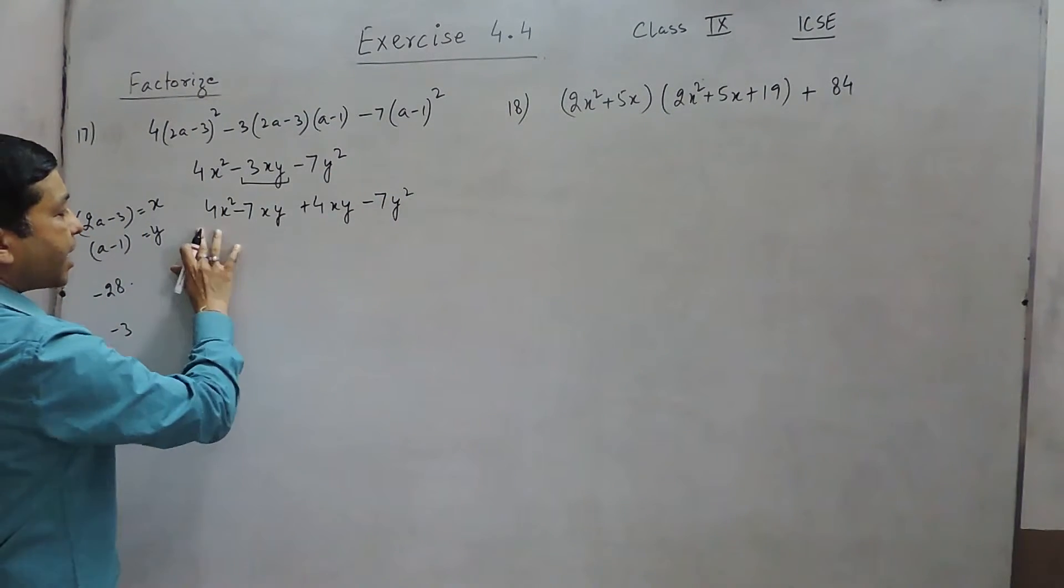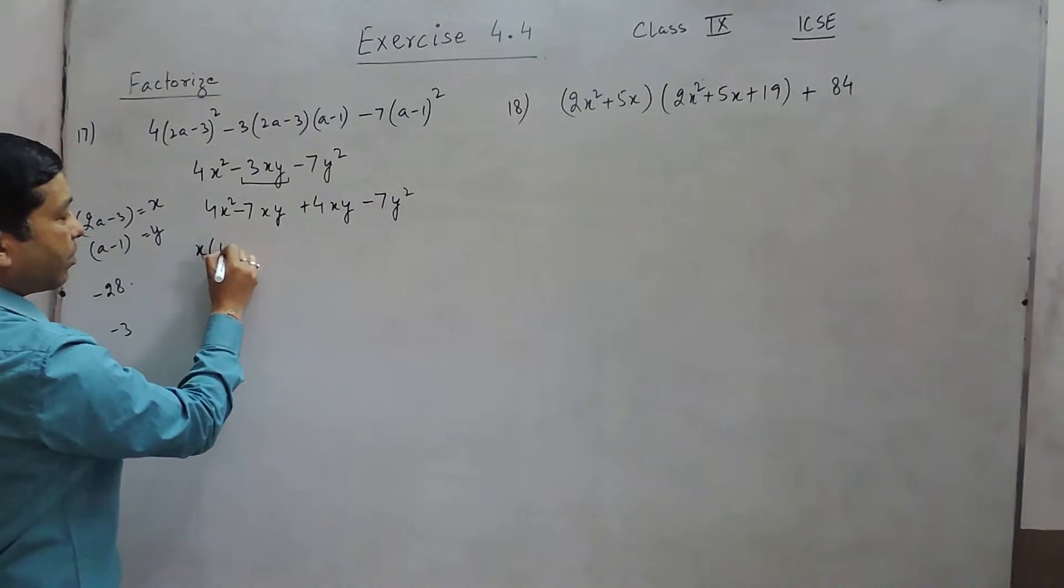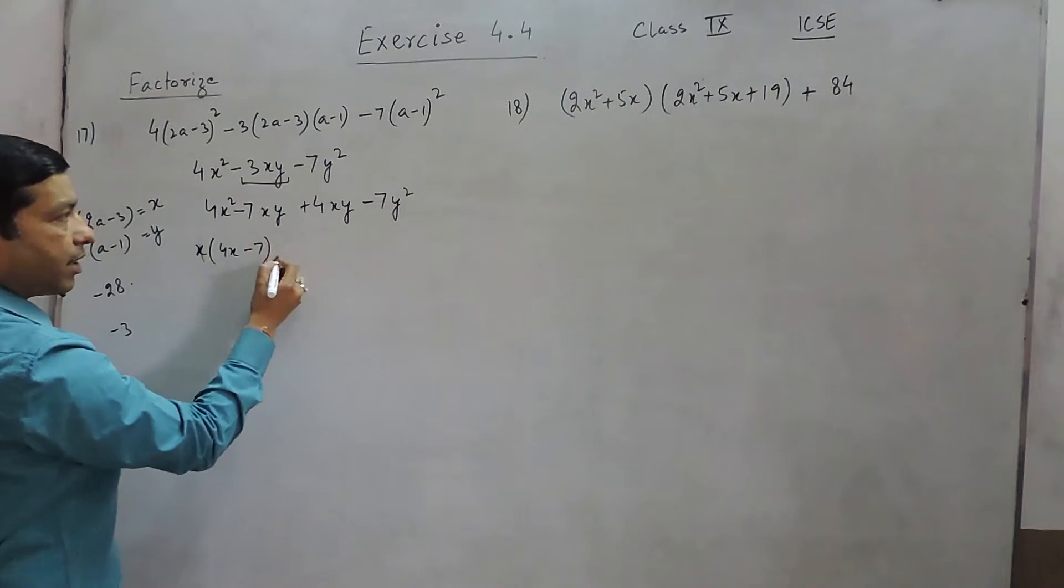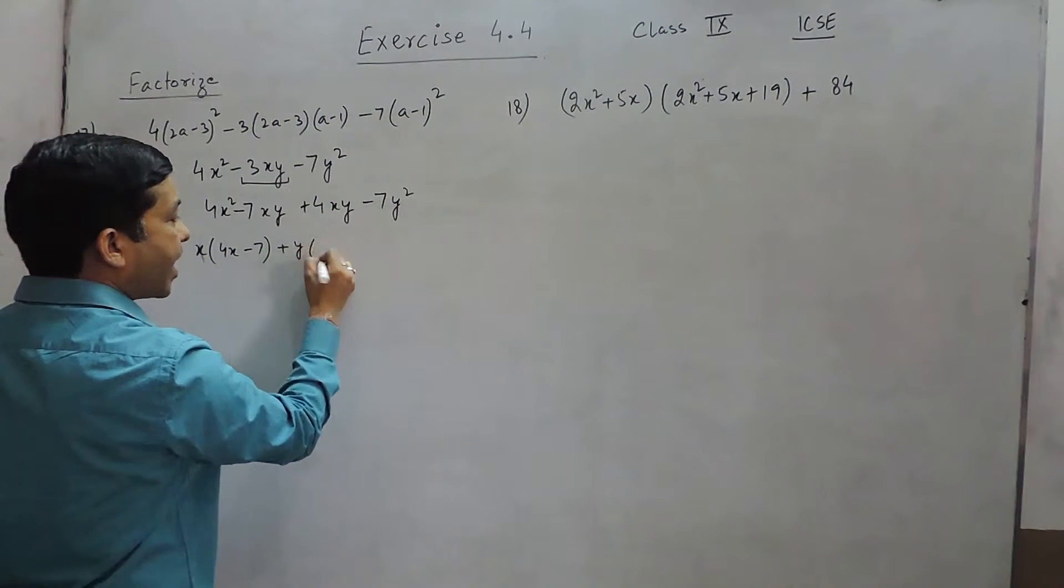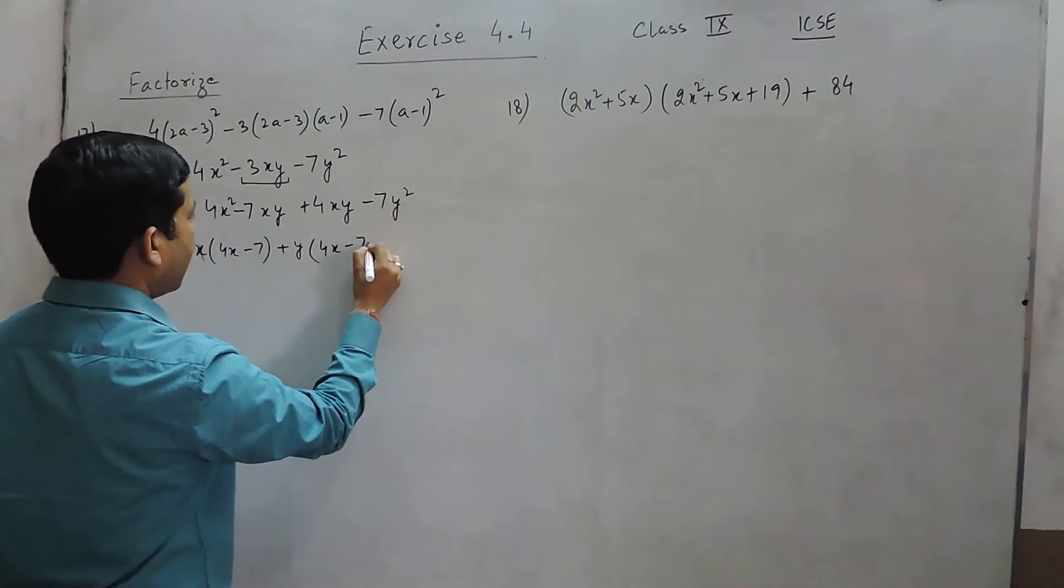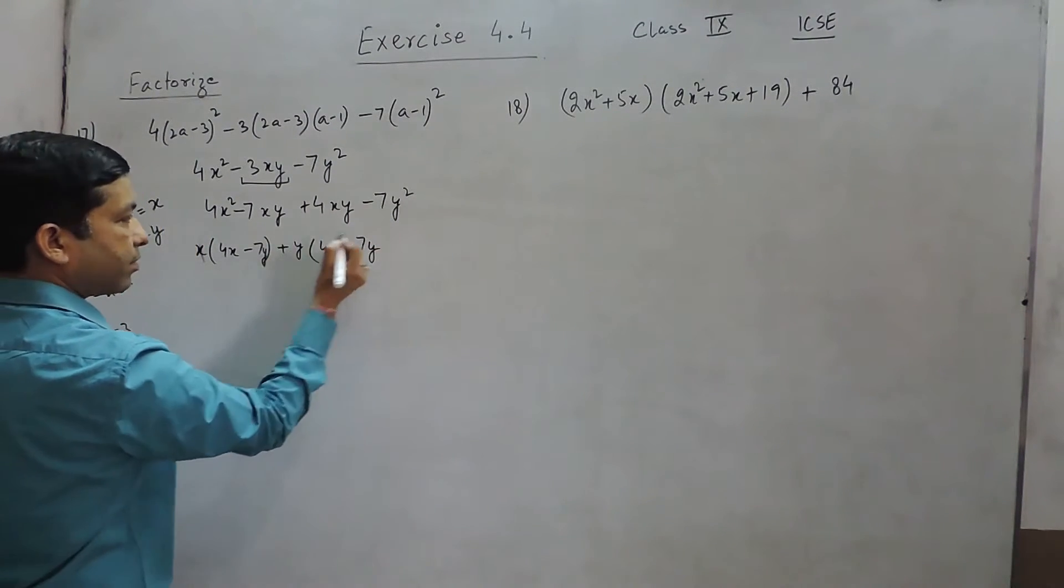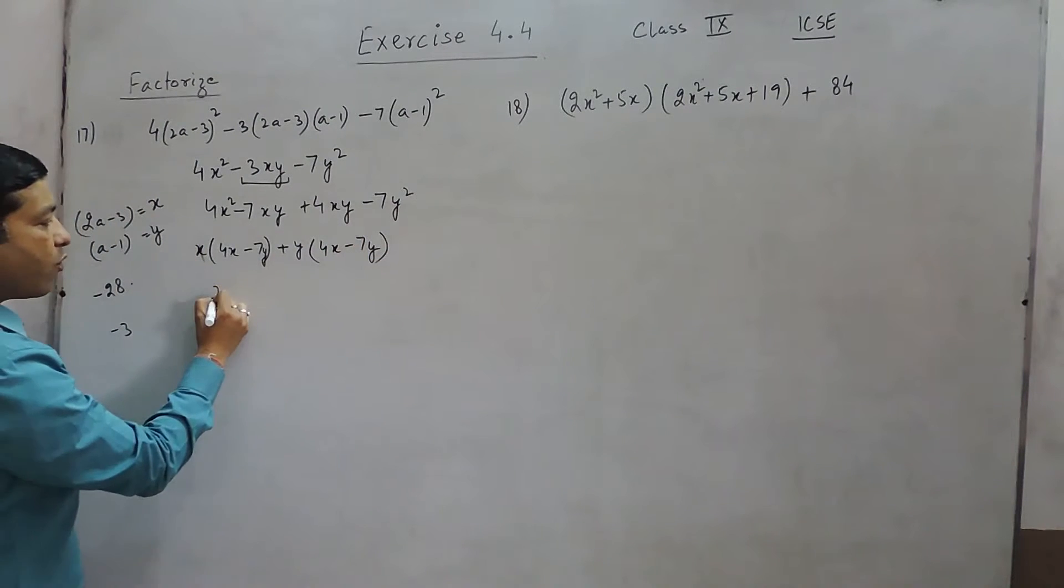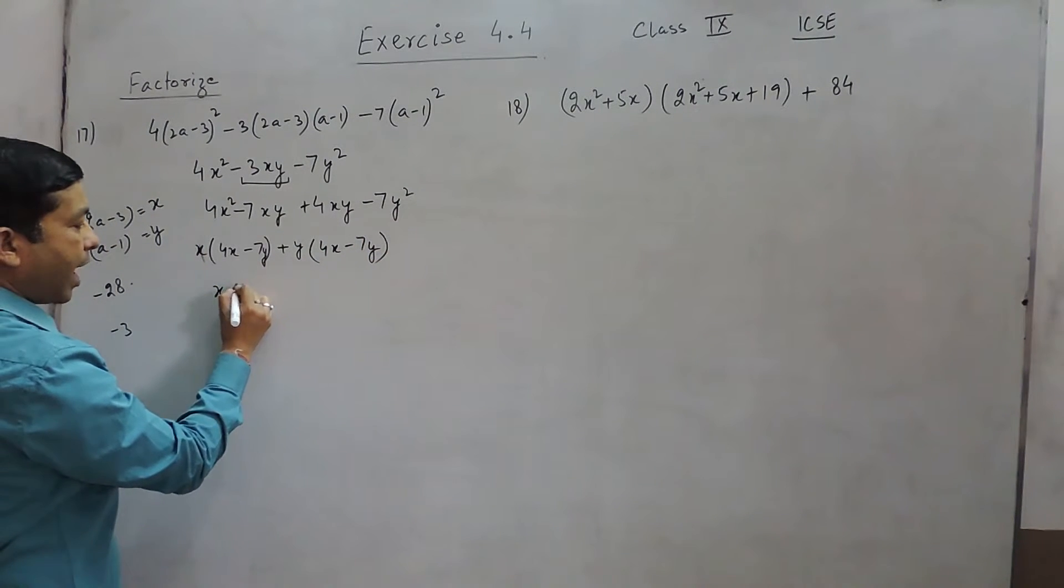So if I take x common it becomes x(4x - 7y). When I take plus y common with these two it is also y(4x - 7y). So the two factors are (x + y)(4x - 7y).